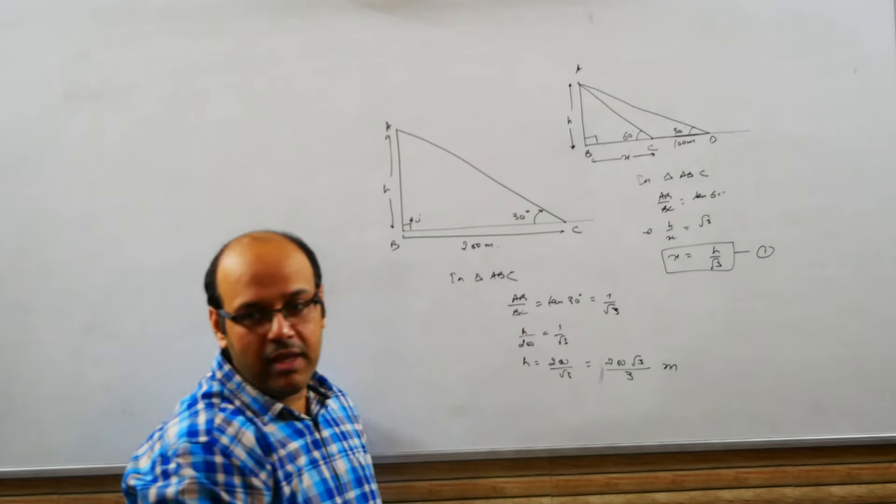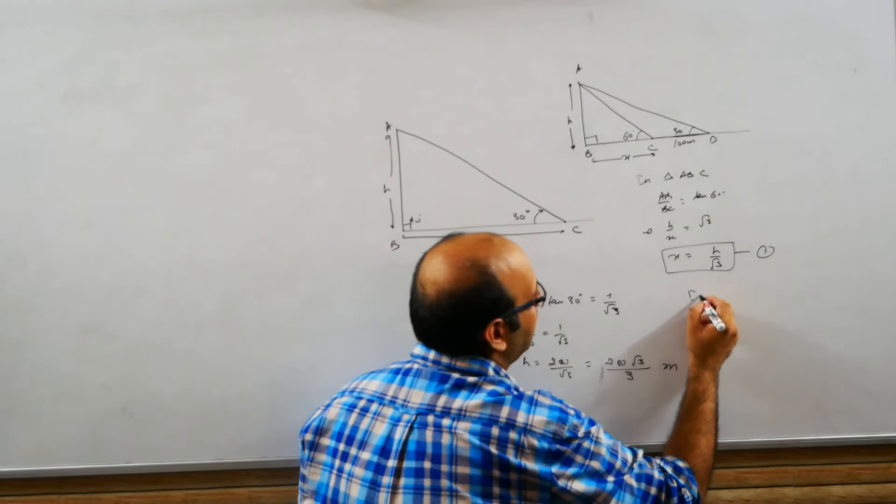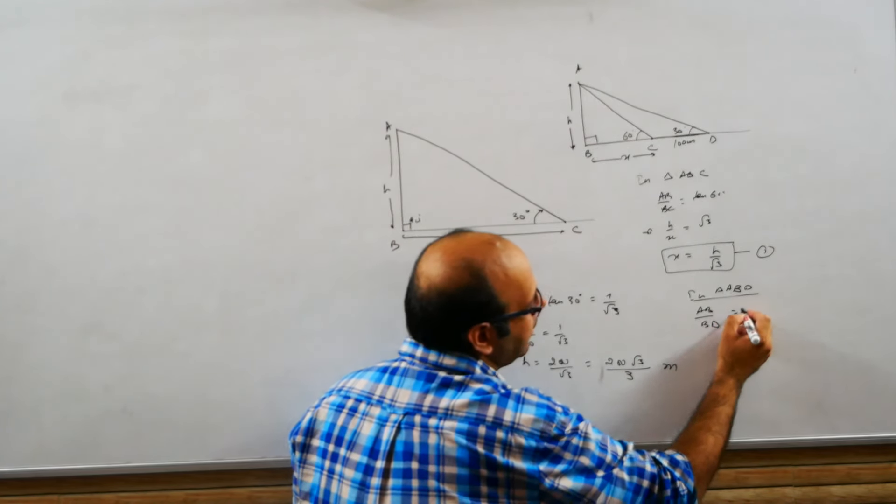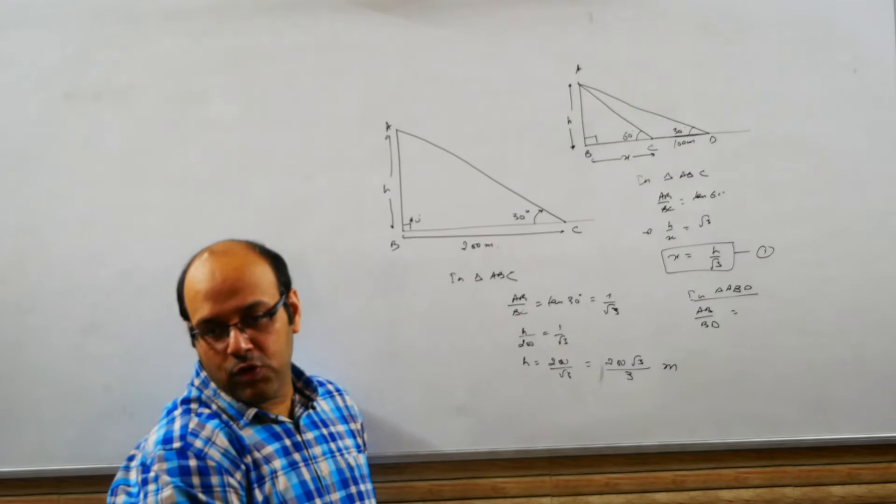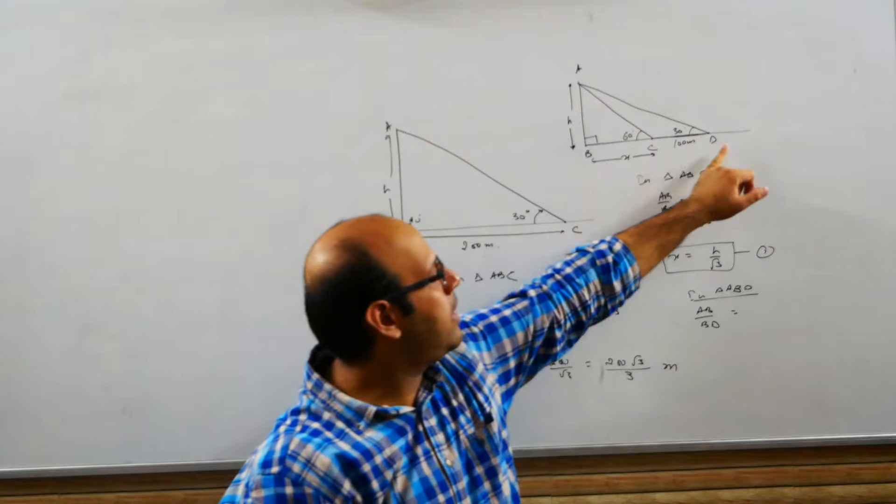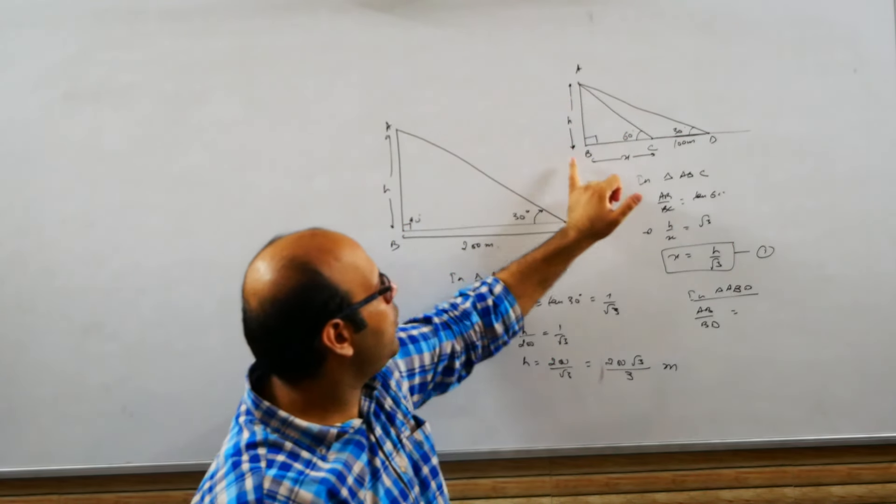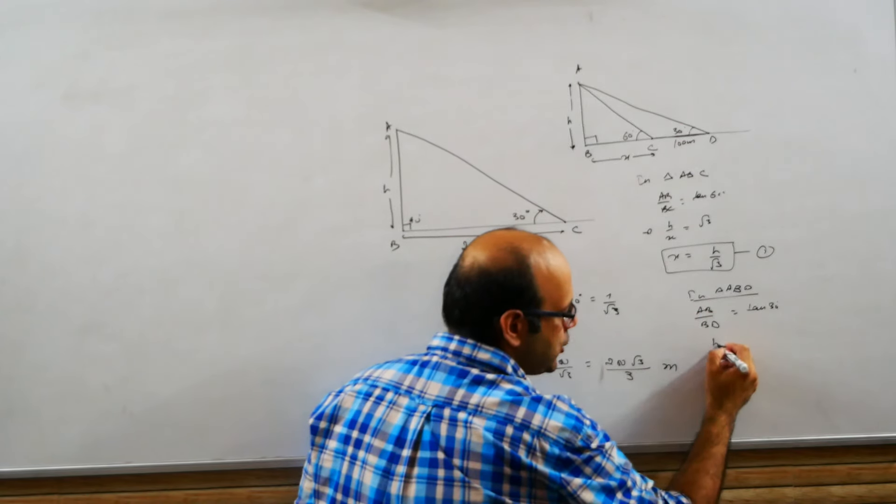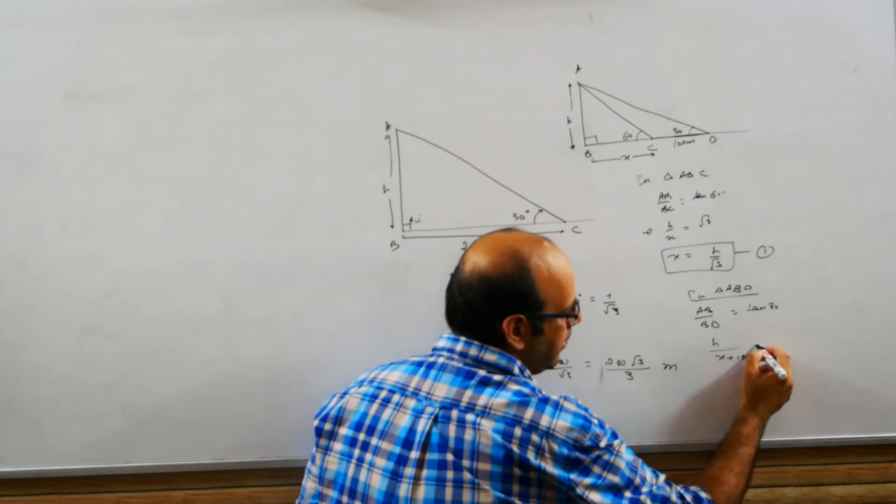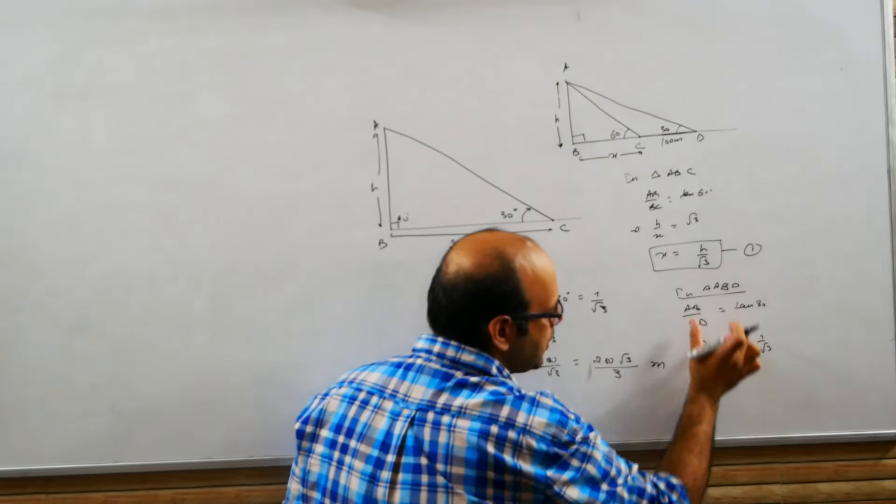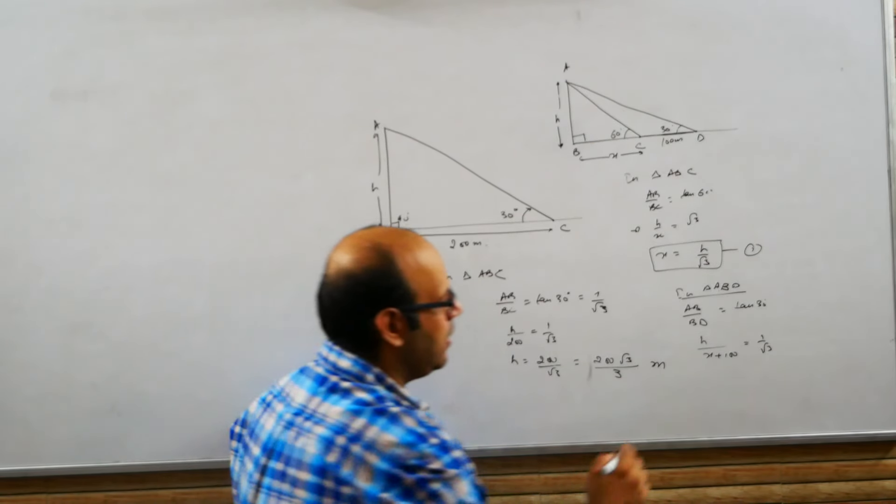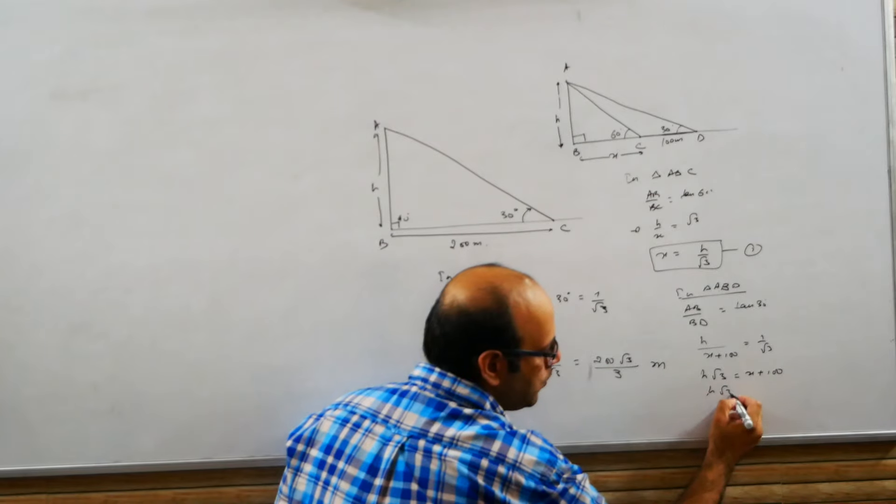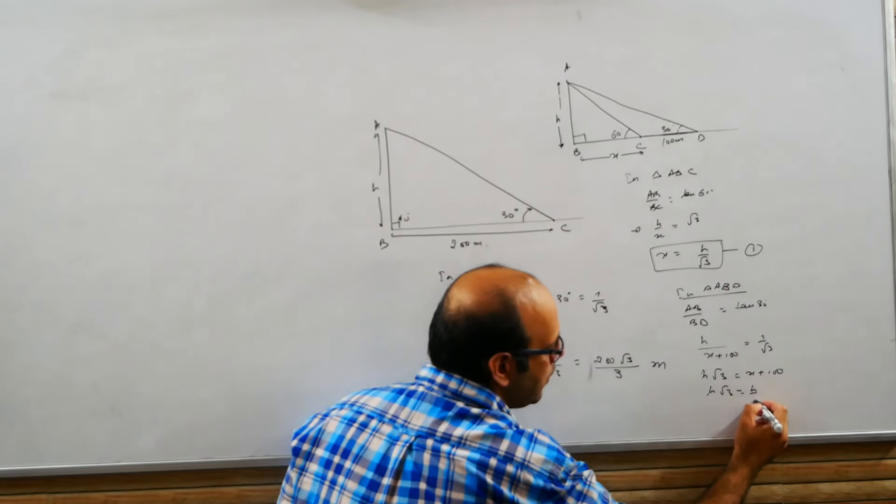In the second triangle, AB upon BD, how much will this be? This is going to be tan 30 degrees because in ABD triangle, this is 30 degrees. What will we get? Perpendicular and this whole BD is base. This is going to be tan 30. So AB is H, and BD is X plus 100. This is 1 over root 3. We got X, substitute X's value, so X will be eliminated. I have X here, I can cross multiply or substitute. H root 3 equals X plus 100, H root 3 plus 100.